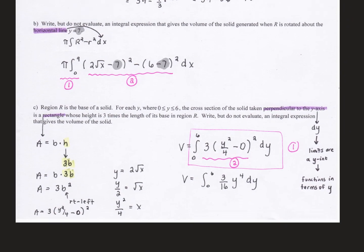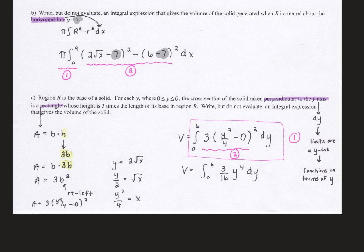In Part C, we've got region R as the base of a solid. This is a little bit different than what we've looked at in the past in that we're looking at cross sections that are perpendicular to the y-axis. If you look at all the previous ones, they said perpendicular to the x-axis. So what that means is we're going to integrate this with respect to y.